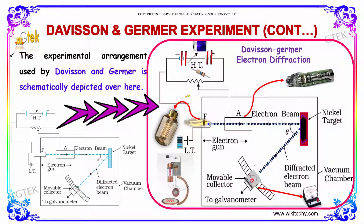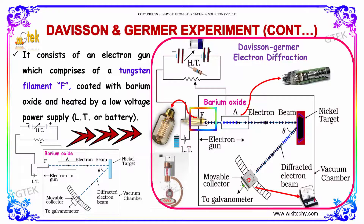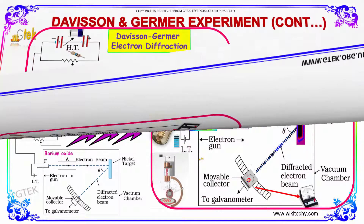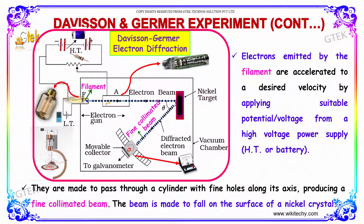Here is the experimental arrangement used by Davison and Germer. It consists of an electron gun which comprises a tungsten filament coated with barium oxide, heated by a low voltage power supply LT. The electrons emitted by the filament are accelerated to a desired voltage by a high voltage power supply, then passed through a cylinder with a fine hole along its axis, producing a fine collimated beam that falls on the surface of a nickel crystal.